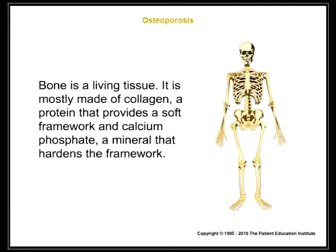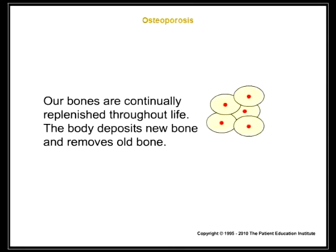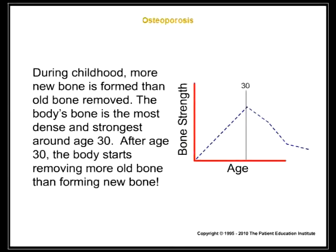Bone is a living tissue. It is mostly made of collagen, a protein that provides a soft framework, and calcium phosphate, a mineral that hardens the framework. Our bones are continuously replenished throughout life — the body deposits new bone and removes old bone. During childhood, more new bone is formed than old bone removed. The body's bone is the most dense and strongest around age 30.